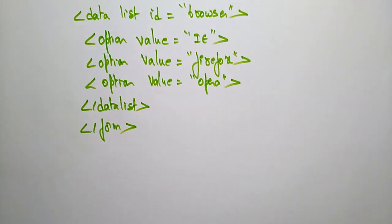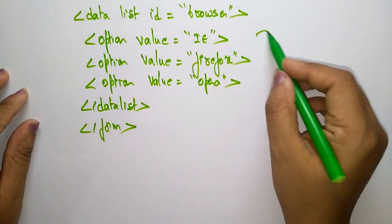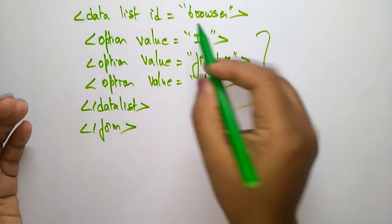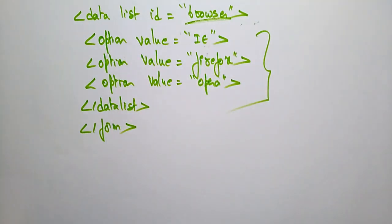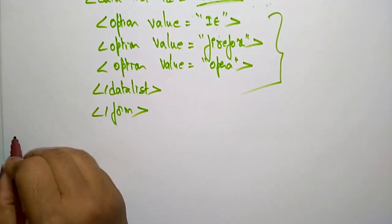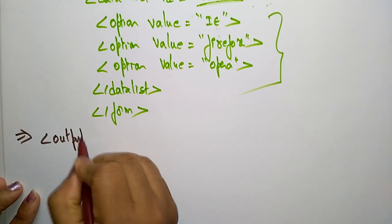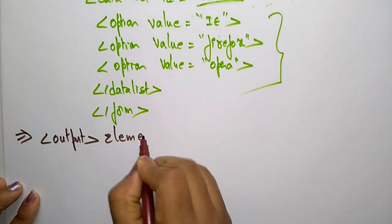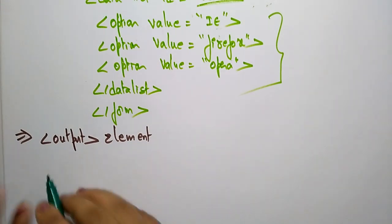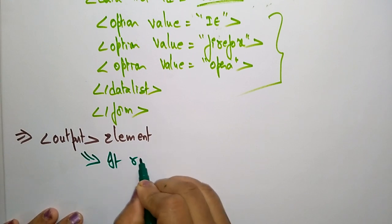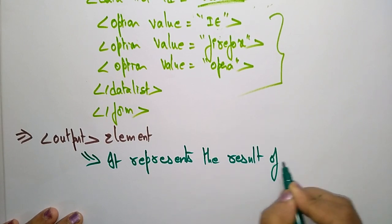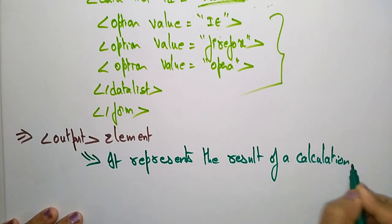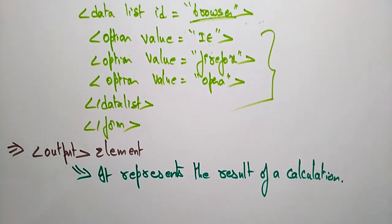This is how you use the datalist element. It specifies predefined options — the id 'browser' contains options like Internet Explorer, Firefox, and Opera. The next HTML5 form element is the output element, which represents the result of a calculation.